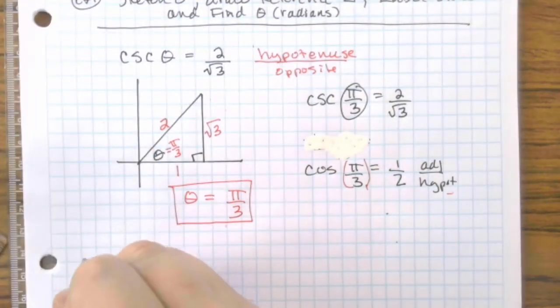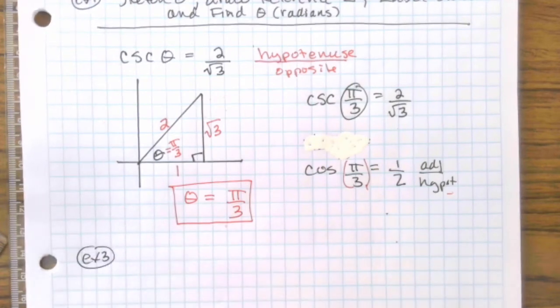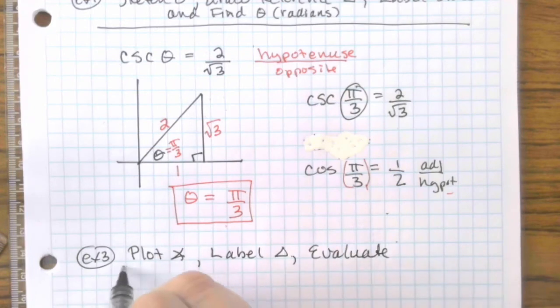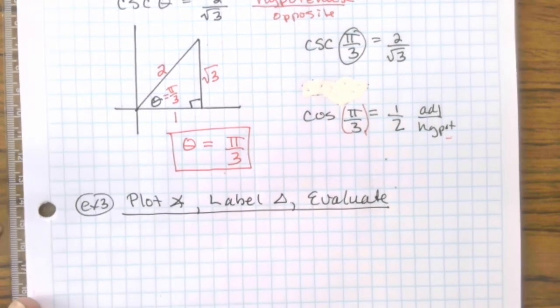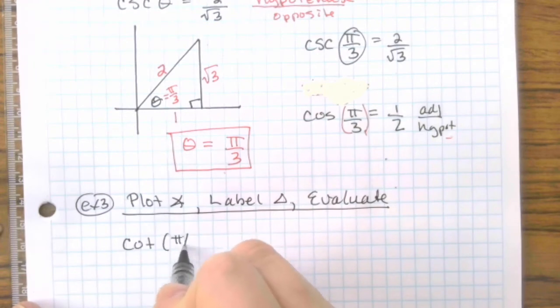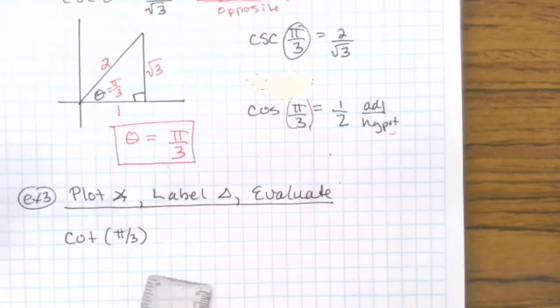Example 3. On this one, you're going to plot the angle, label the triangle, and then evaluate. That's your goal. So we're going to do cotangent of π/3.